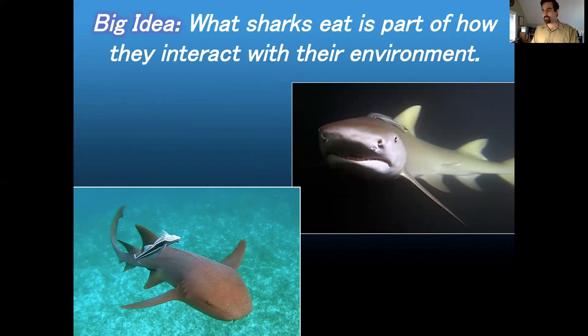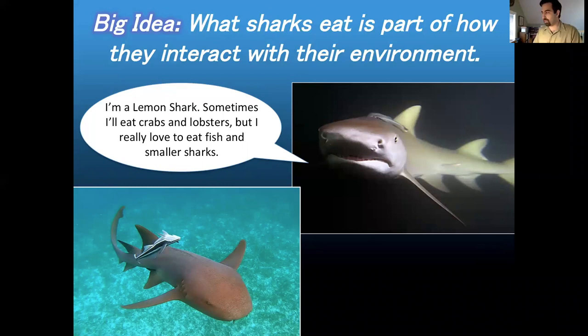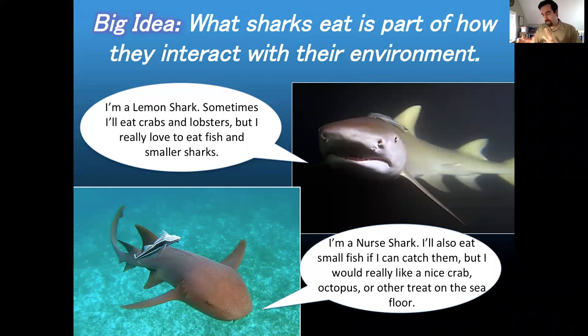I have two pictures here on the screen. One is a lemon shark — that's the one looking right at the camera — and in the bottom left-hand corner there's a nurse shark. The lemon shark says: sometimes I'll eat crabs, sometimes lobsters, but what I really love to eat is fish and smaller sharks. The nurse shark, on the other hand, says it'll also eat small fish, but would really prefer a nice crab or octopus it could find on the seafloor. Just because these two sharks have different diets, they'll interact differently with the animals around them.